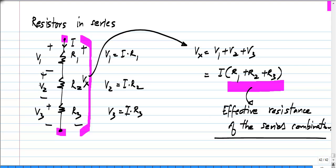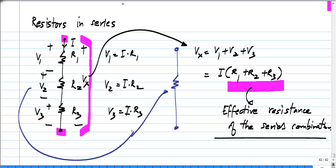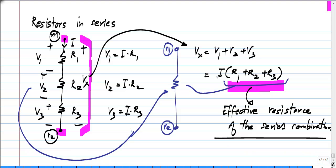What does it mean? It means that this entire combination is equivalent, between the two ends — let me call them terminals N1 and N2 — to a single resistor. Between N1 and N2 I have a single resistor whose value is given by this whole thing. The effective resistance of a series combination of resistors is the sum of individual resistors.